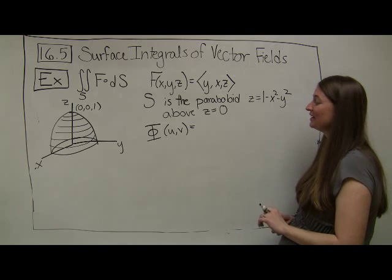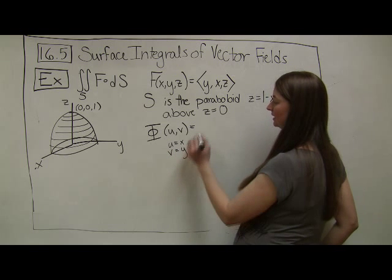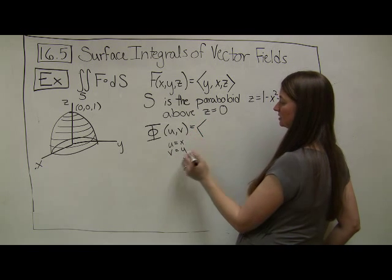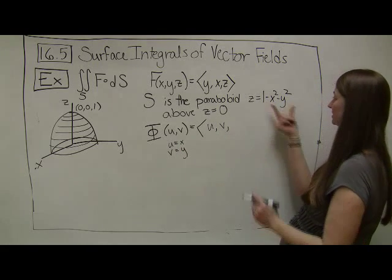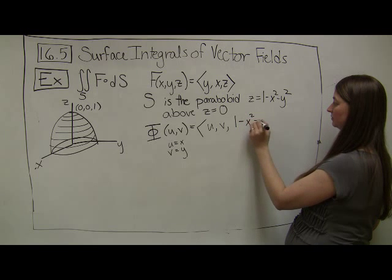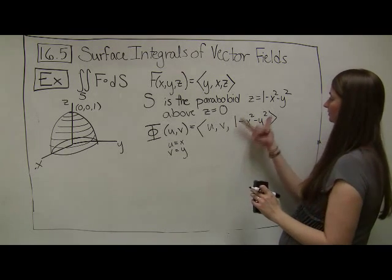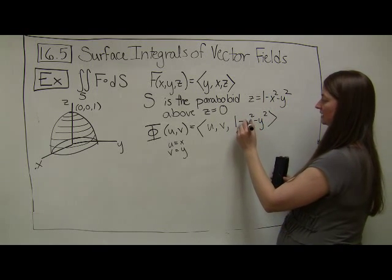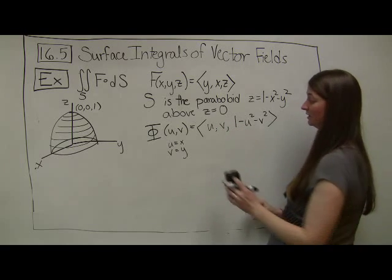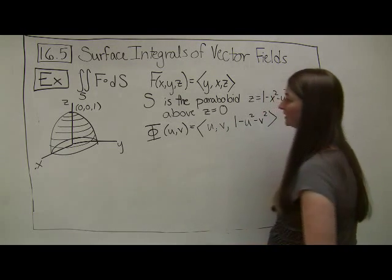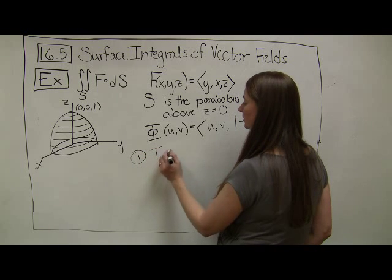Let's parameterize it the easy way. I'm going to let u = x and v = y, which means our parameterization is given by (u, v, z), where z is a function of x and y. So z = 1 - u² - v², since x = u and y = v. This gives us our surface. Now step one: compute both partial derivatives so we can find our normal vector t_u cross t_v.